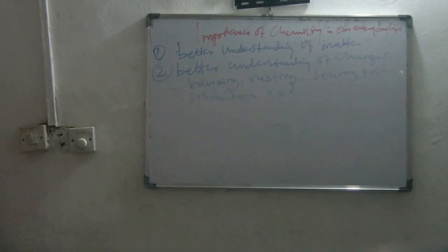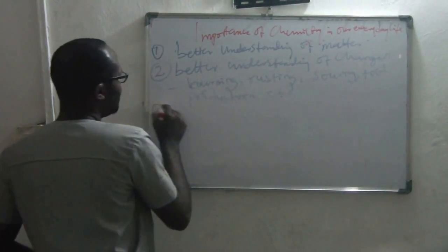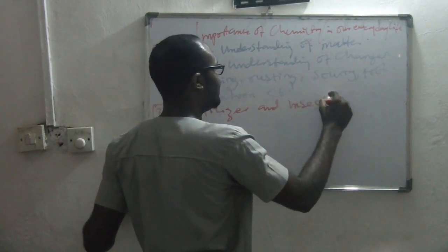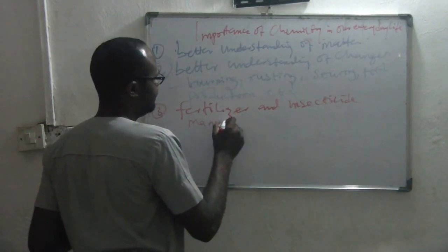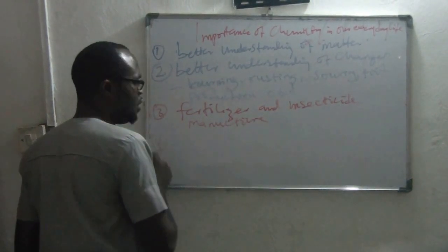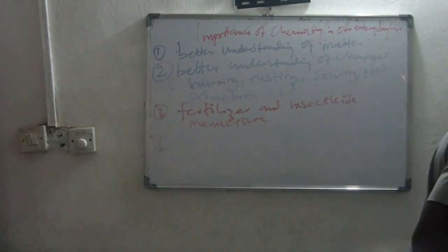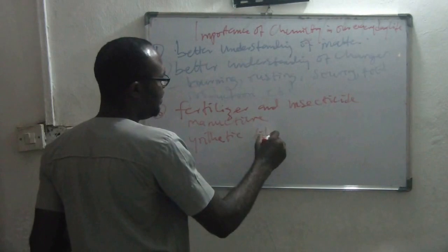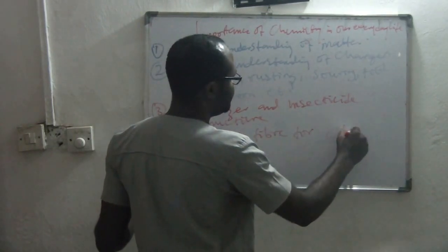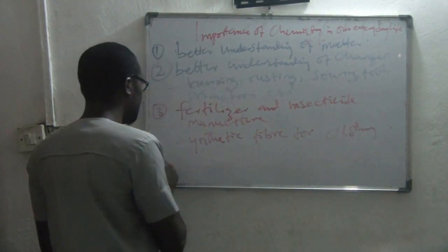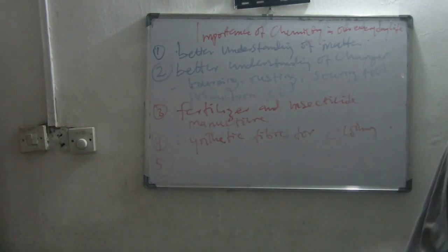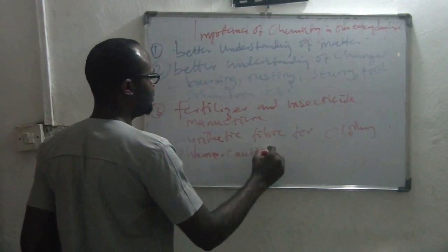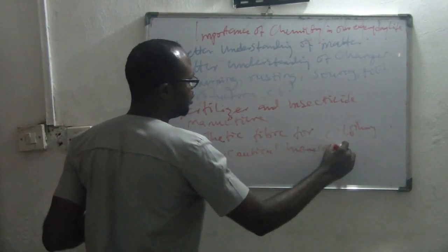What other things can chemistry help you do? Fertilizer and insecticide manufacturing — chemistry can help you in fertilizer and insecticide manufacturing. Number four, it can help you in producing synthetic fiber for clothing. Chemistry can also help those people working in pharmaceutical industries for the production of drugs.